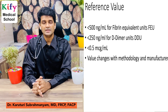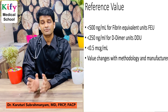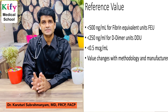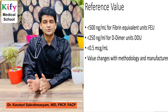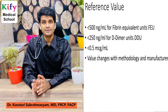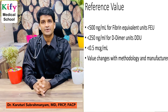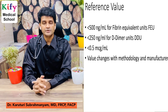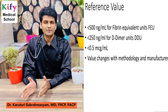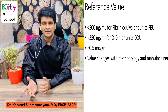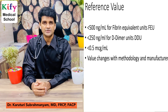The reference value for D-Dimer is less than 500 nanograms per mL in fibrin equivalent units, less than 250 nanograms per mL in D-Dimer units, or less than 0.5 micrograms per mL. These normal values vary depending on the method used and the manufacturer.